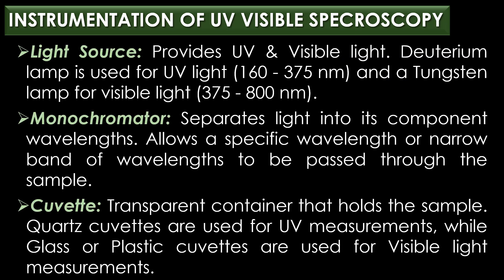First, the light source provides UV and visible light. Commonly, a deuterium lamp is used for UV light ranging from 160 nm to 375 nm, and a tungsten lamp is used for visible light ranging from 375 nm to 800 nm. Second, the monochromator separates the light into its component wavelengths and allows a specific wavelength or narrow band of wavelengths to be passed through the sample.